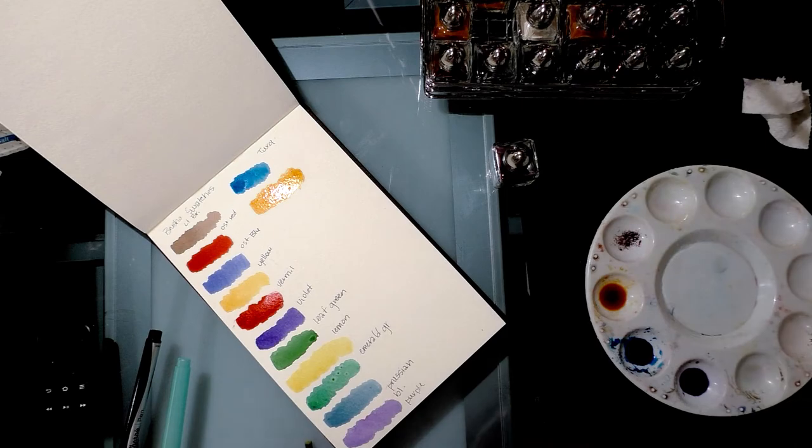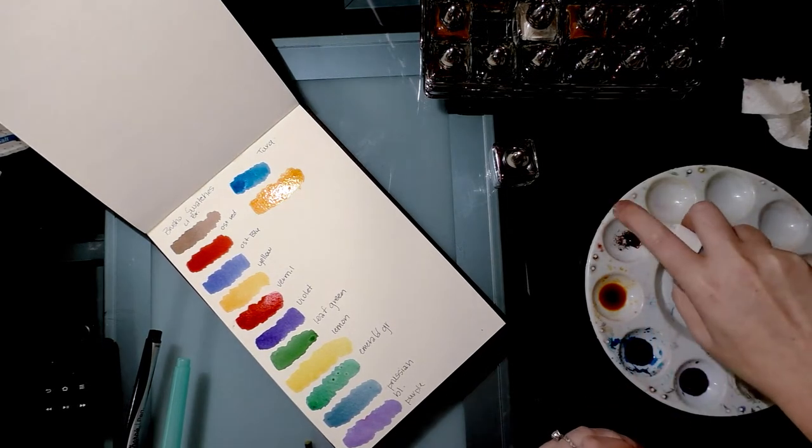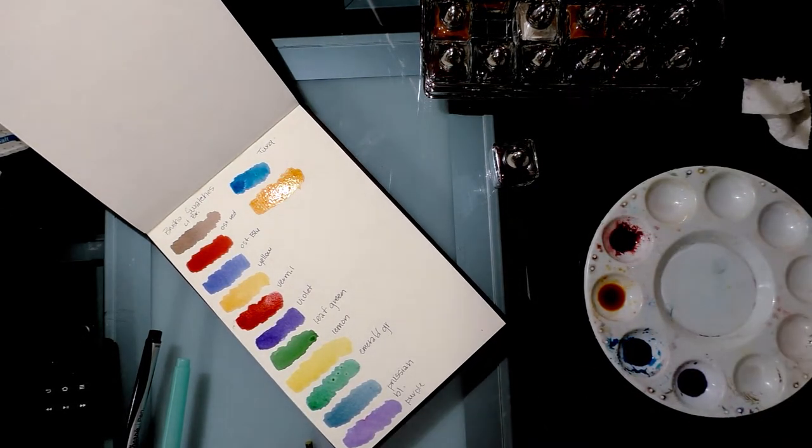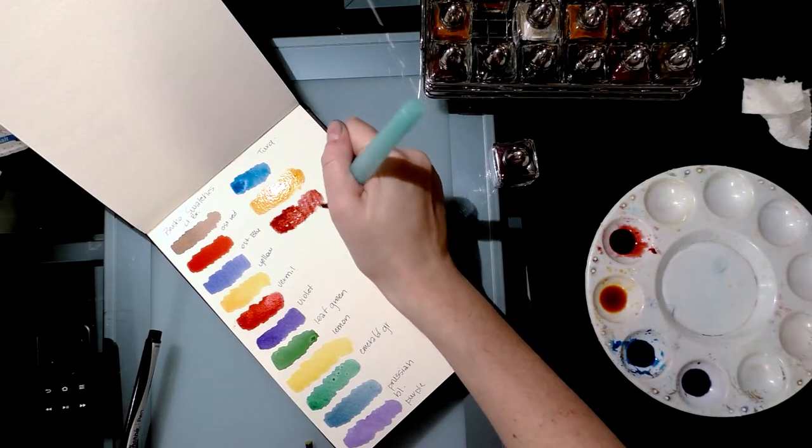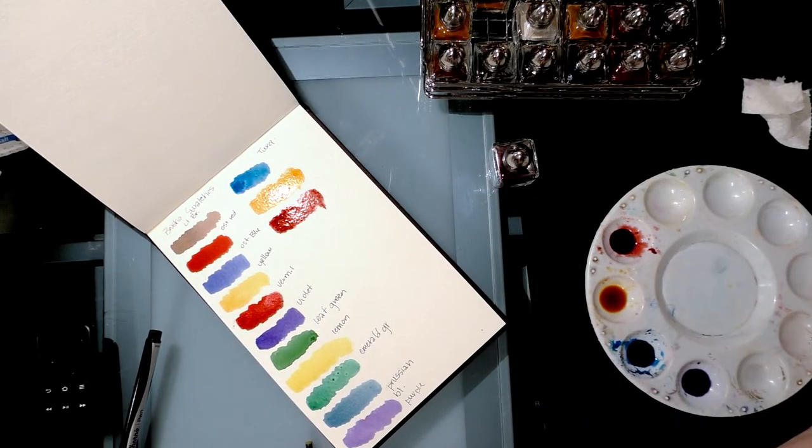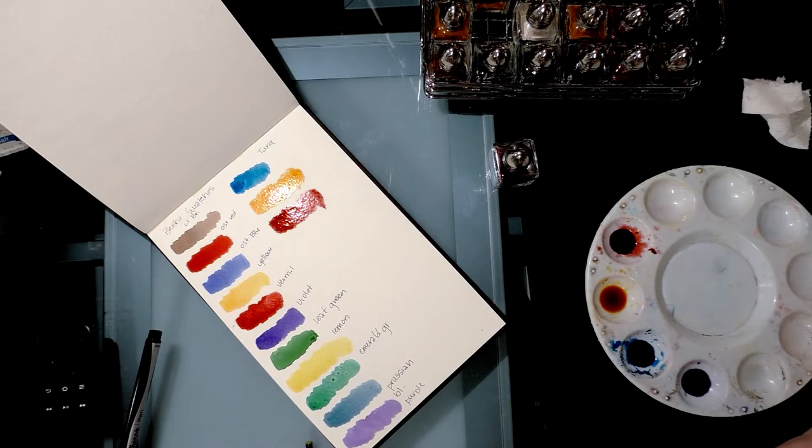All right, that's crimson - that should be a nice deep red. And see, it's more of like an oxblood than a crimson. Crimson is like an intense red, sort of like that vermilion is except a little more blue. And this one is a lot more blue, not just a little more blue.